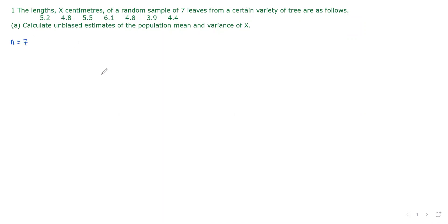In part A, we need to calculate unbiased estimates of the population mean and the variance of x. The unbiased estimator of the population mean is the sample mean, and the unbiased estimator for the population variance is the sample variance. In order to calculate the unbiased estimates of the population mean and the population variance, we need to find the sum of x and also the sum of x squared.